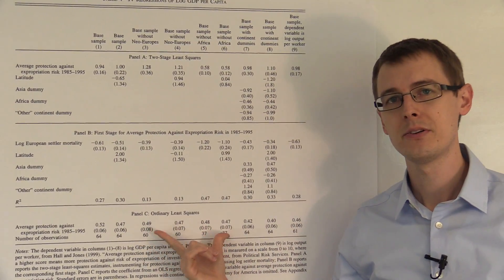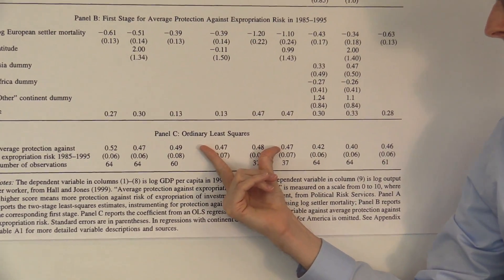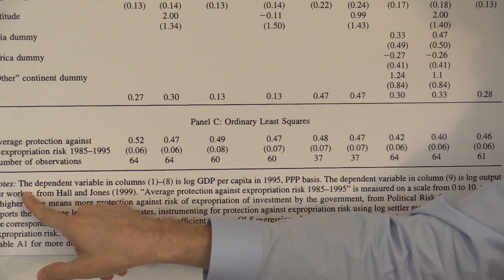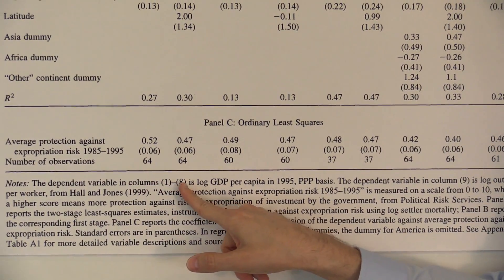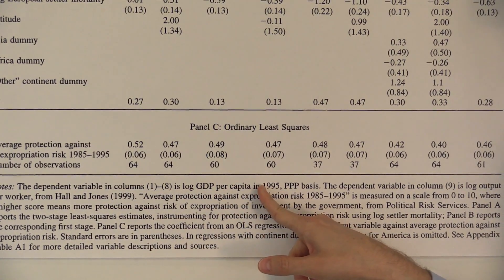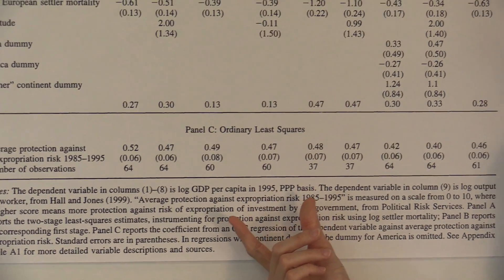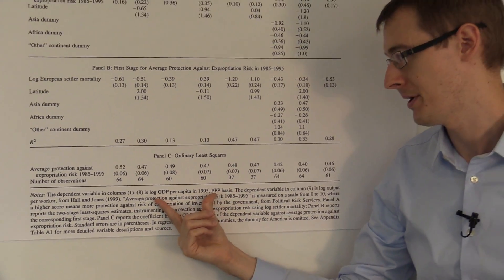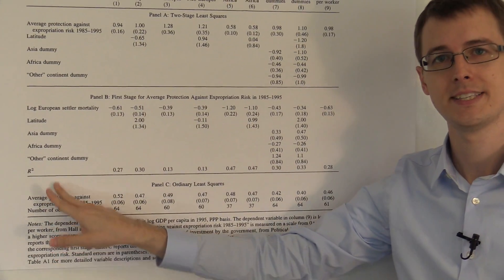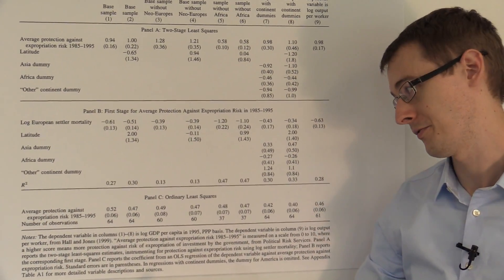Down here in panel C, it's titled Ordinary Least Squares. They say in the notes the dependent variable in columns one through eight is log GDP per capita in 1995. So that's our outcome variable, GDP per capita. Over here, these are the right-hand side variables, or our explanatory variables.